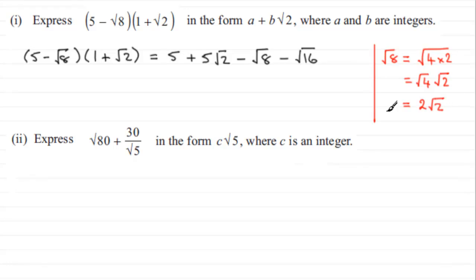So I can substitute this value in. What we've got then is 5 + 5√2, and for -√8 I write that as -2√2, and √16 is 4, so -4. Grouping up our terms, we've got 5 - 4 which is 1, and 5√2 - 2√2, which is +3√2. So we've got that in the form a + b√2 where a and b are integers: a = 1 and b = 3.